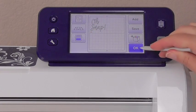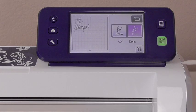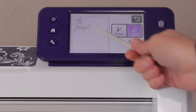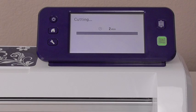I'll click OK, OK, and cut. And now when it cuts it's going to cut out that little triangle first and then it'll pause so I can see how well it did.